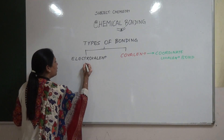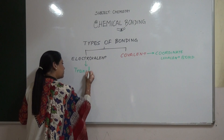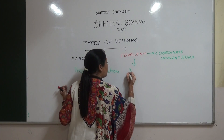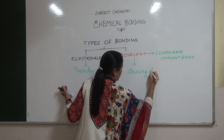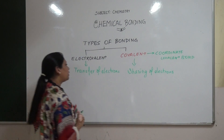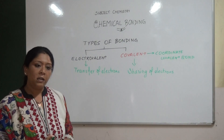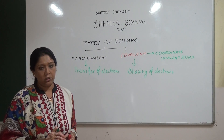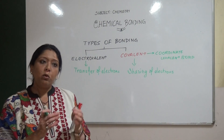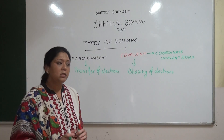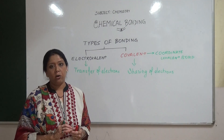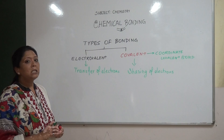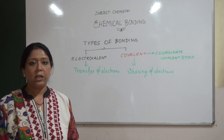Electrovalent bond is a bond which is formed by transfer of electrons, and covalent bond is a bond which is formed by sharing of electrons. In the chapter atomic structure, we studied that atoms can be subdivided into subatomic particles, one of which is the electron. Electron is an essential subatomic particle which takes part in the chemical reaction. Mostly the electron is the subatomic particle which takes part — either the electron is lost, the electron is gained, or the electron is shared. These are the three basic modes by which a chemical bond is formed.